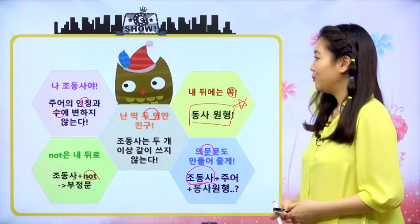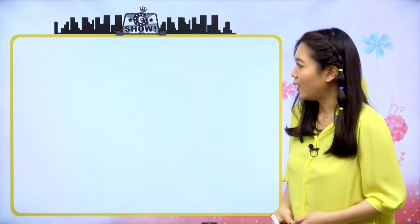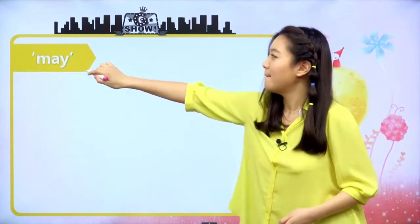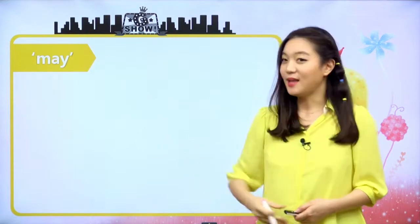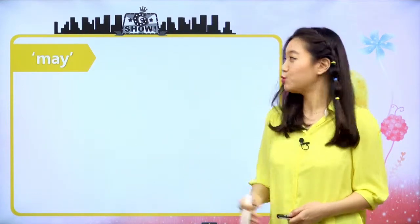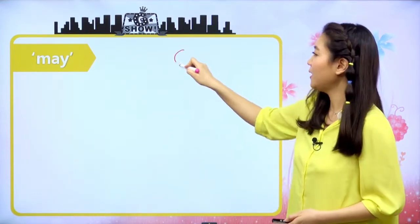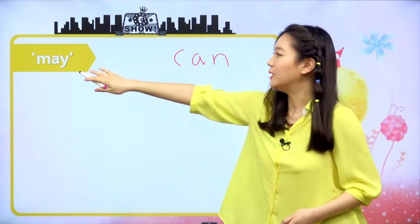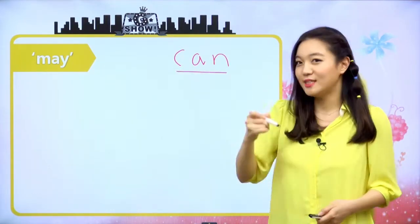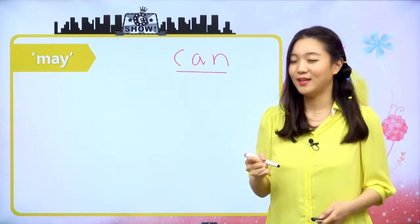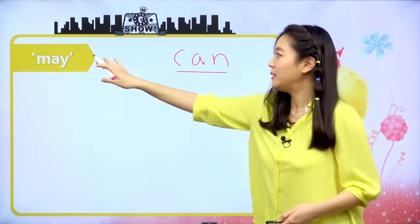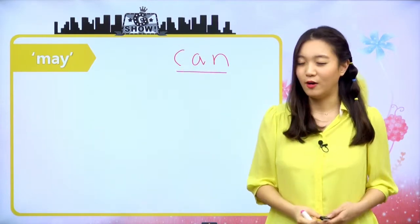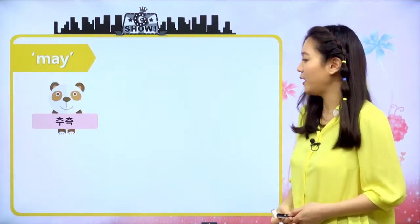그럼 본격적으로 들어가 보도록 하겠습니다. 오늘의 주제는 may입니다. 우리 지난 시간에 조동사 can에 대해서 공부를 했었는데, 이 may는 조동사 can과 아주 친한 친구예요. 그래서 비슷한 부분도 있고 그렇지 않은 부분도 있어요. 어떤 것들이 있는지 한번 살펴볼게요.